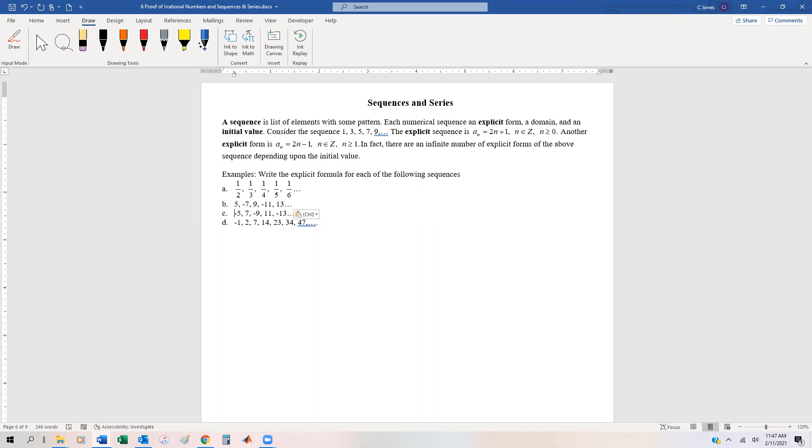So for example, let's consider this sequence just as a basic example: 1, 3, 5, 7, 9, where all we're doing is we're just increasing each element by 2. One way to write this sequence explicitly is by using a sub n, where n is the index, is equal to 2n plus 1, where n is an element of the integers n greater than or equal to 0.